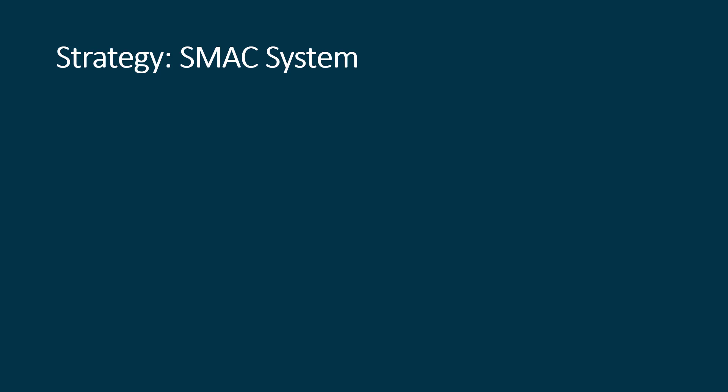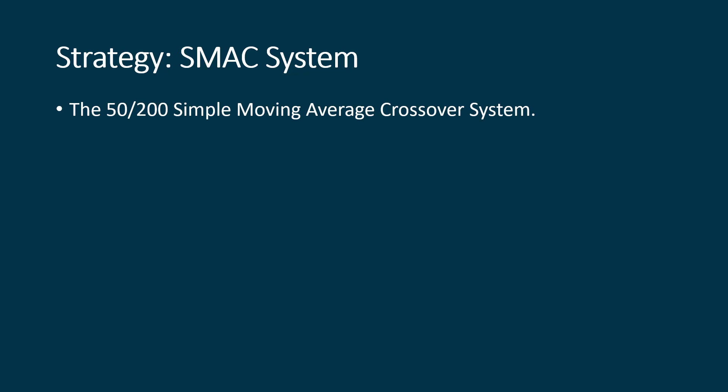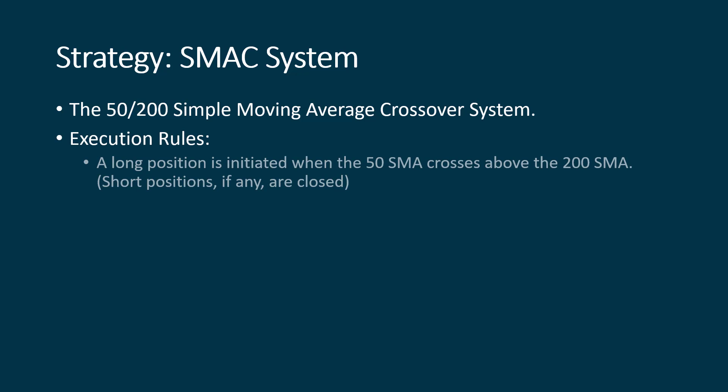Here is the system, and I just call it SMAC — it's an acronym for Simple Moving Average Crossover. We use a 50-period moving average and a 200-day moving average. And when they cross over, that's when we do something. As long as they don't cross over, we don't do anything. Here are the rules for this particular strategy.